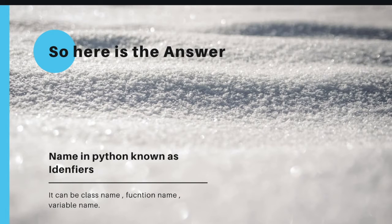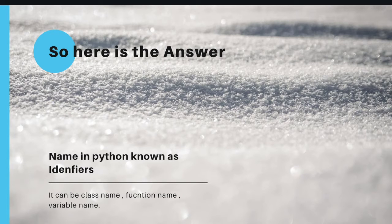Suppose you live in a particular city and a particular area — how will you tell anyone else where you live? You can't just say a general location; you have to specify the particular location. That is why every place has a particular name to identify it. Similarly, in Python, we give names to classes, variables, and functions to identify them.